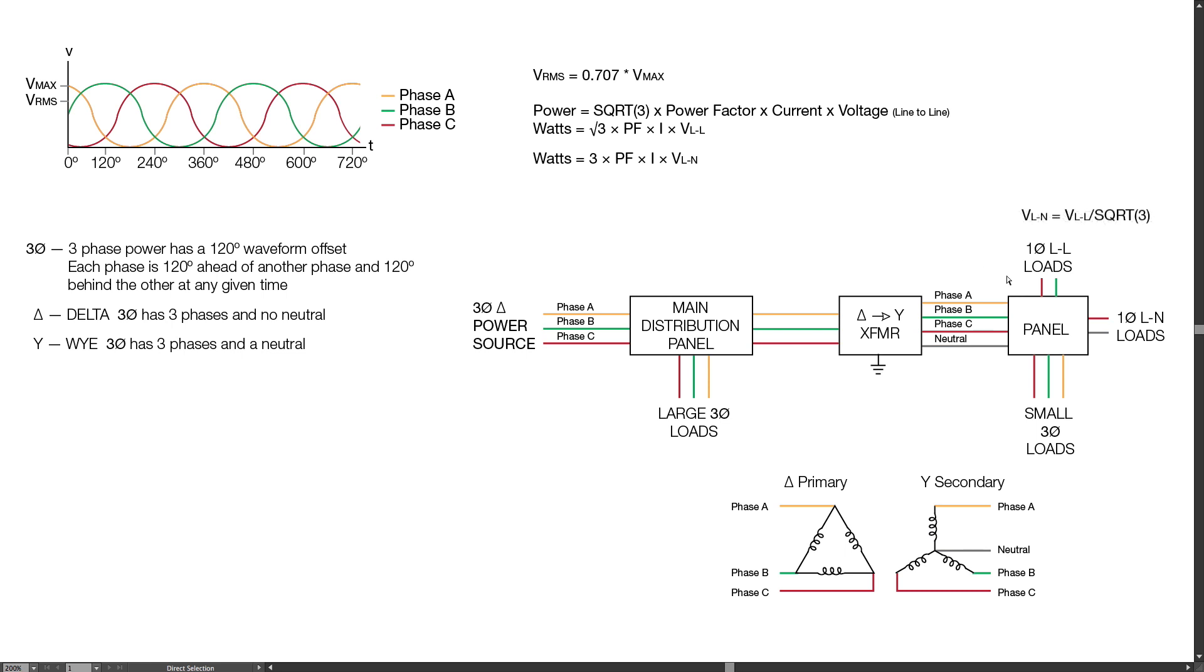We have three-phase power coming into this panel, and here we would have a line-to-line load, perhaps 208 volts. To calculate the line-to-neutral voltage, we need to take the line-to-line voltage and divide it by the square root of 3. So if the line-to-line voltage is 208, then 208 divided by the square root of 3 gives us 120 volts line-to-neutral.